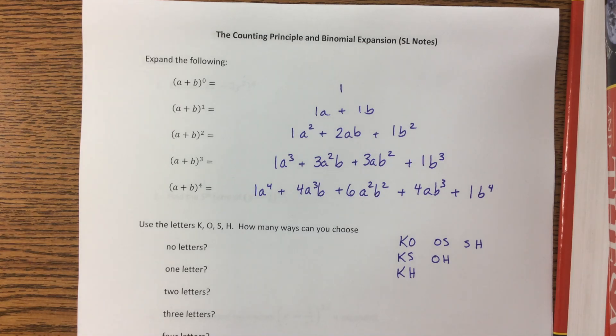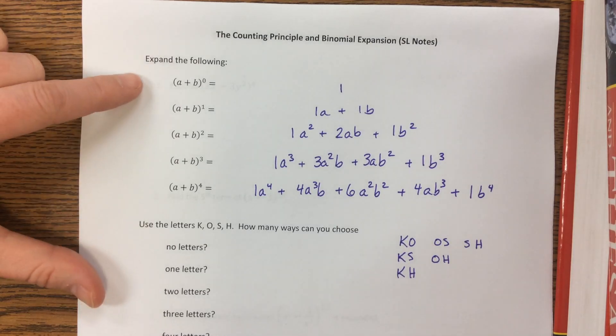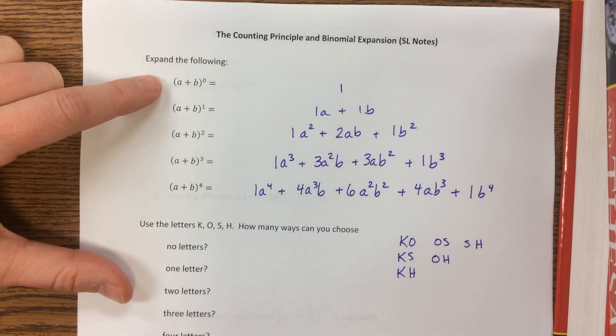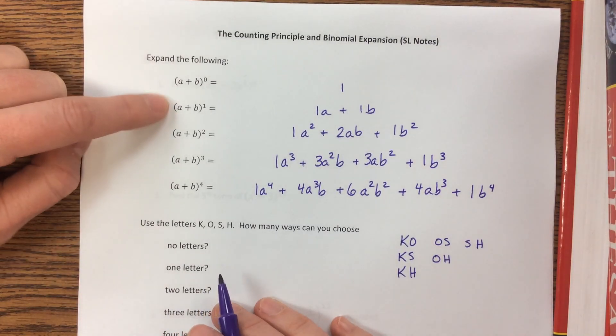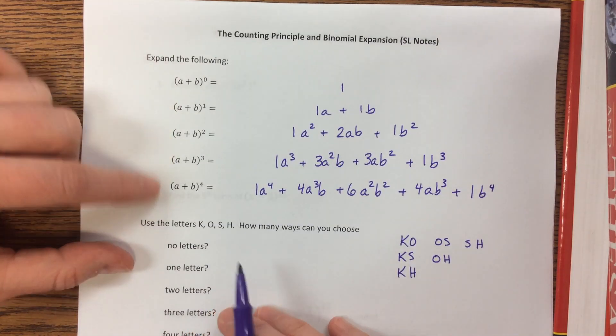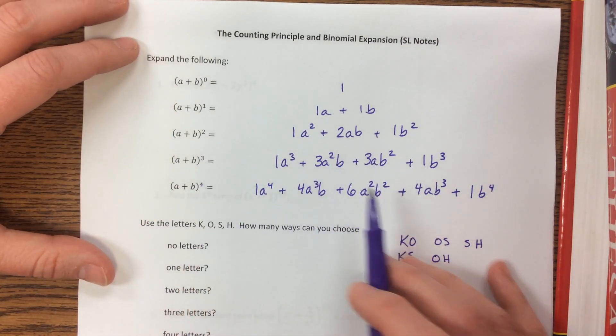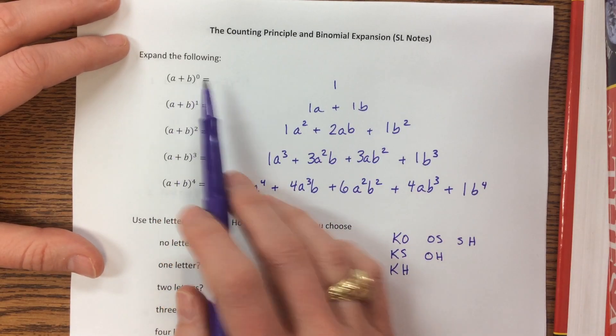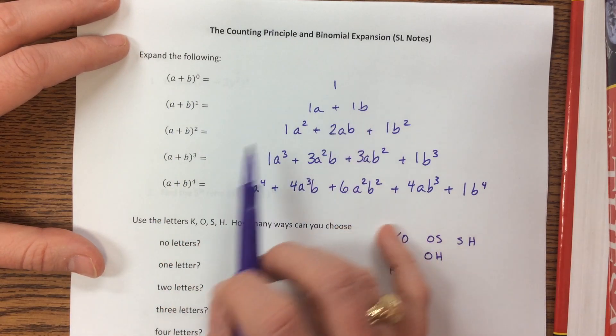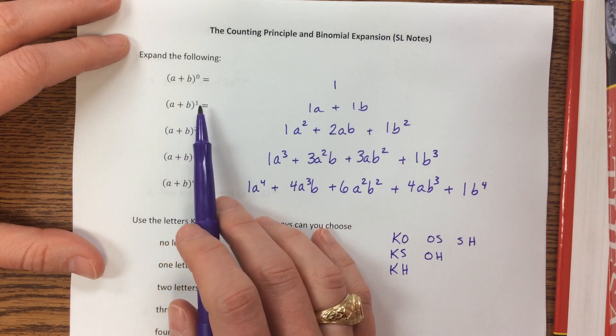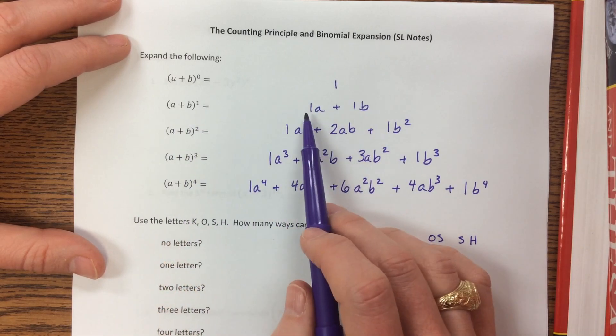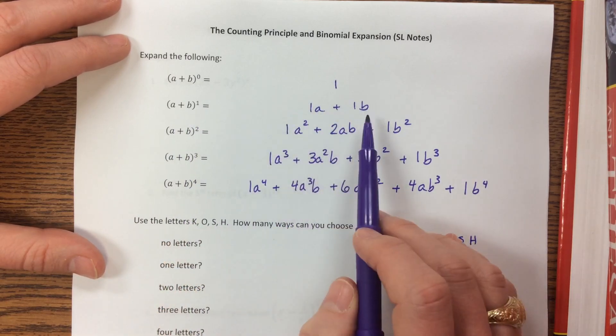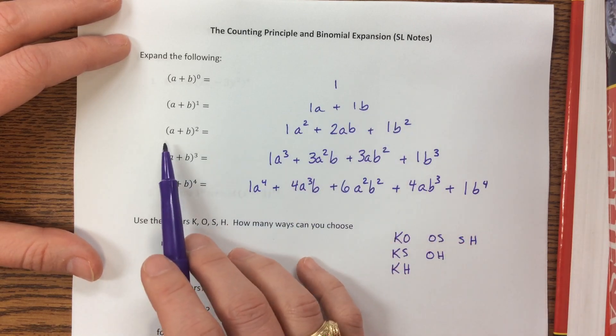This is the first video that's dealing with the counting principle and binomial expansion. And as we get started, I have a binomial, a plus b, and I'm raising it to all these different powers. And I wrote it out in a specific way so that you can see the pattern that's happening. Keeping in mind, anything raised to the zero power is 1. And then a plus b to the first power is just a plus b. But the coefficients here are 1. So I wrote down these ones so that you can see what's happening in just a second.